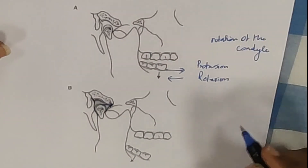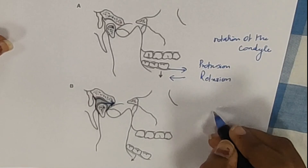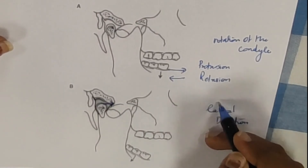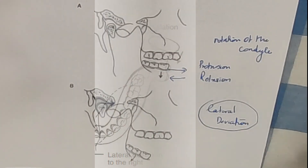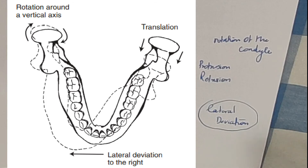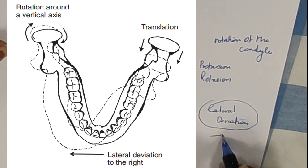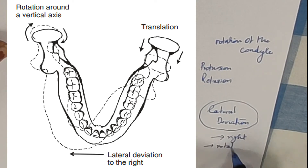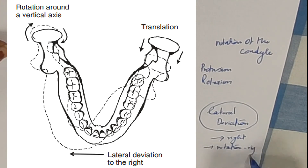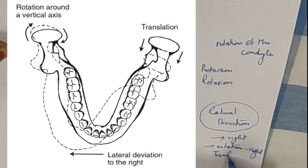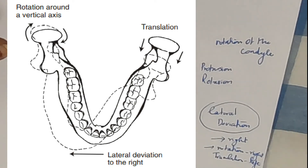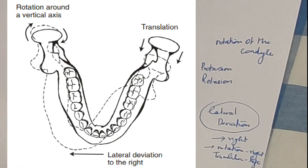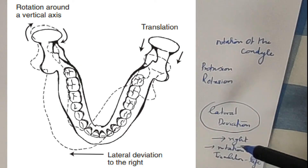The last movement of the temporomandibular joint is lateral deviation — side-to-side movement of the jaw, which can also occur during chewing. For lateral deviation to the right, both joints move differently: the right mandibular condyle undergoes rotation, while the left condyle undergoes forward translation. It is a reciprocal movement — rotation at the right condyle and forward translation at the left condyle. Protrusion and lateral deviation are very minimal movements overall.